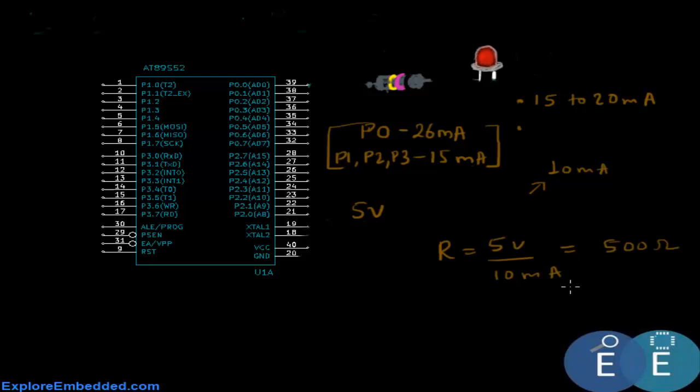We do not get a 500 ohm resistor, so we use a 470 ohm resistor. What we do is connect the port pin to a resistor, and from the other end of the resistor we connect it to the anode of the LED. From the cathode we connect it to the ground of the 8051 microcontroller.